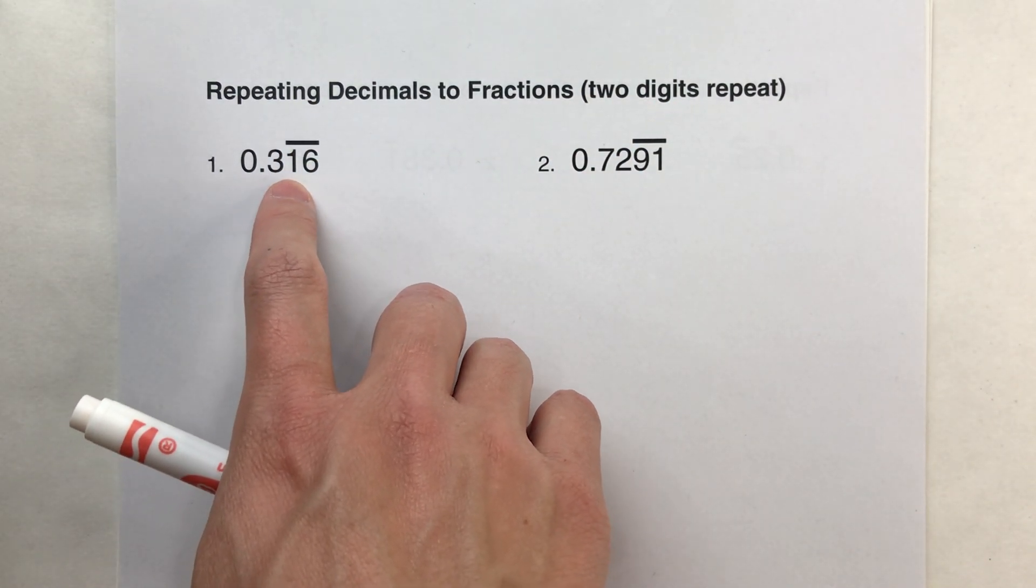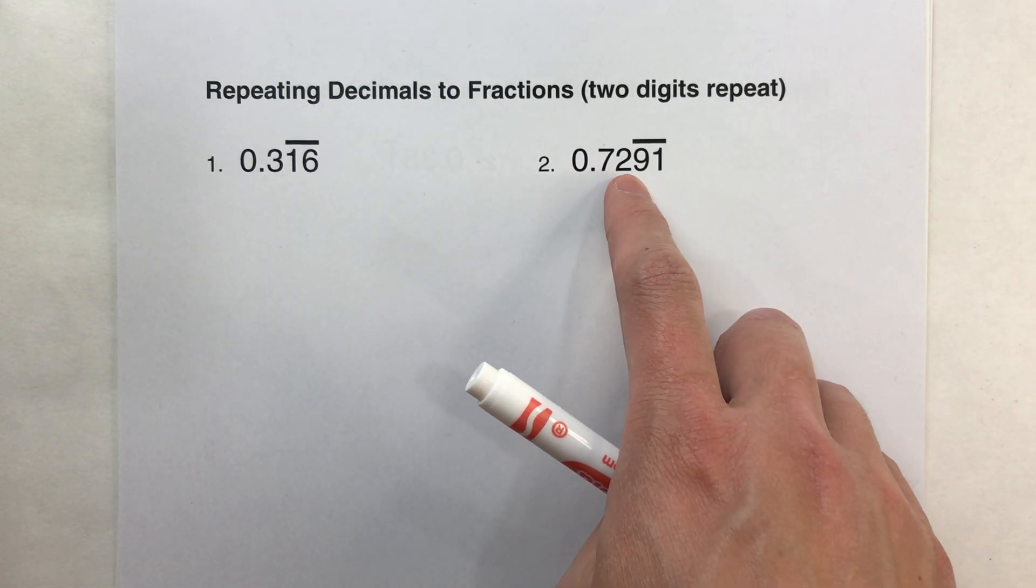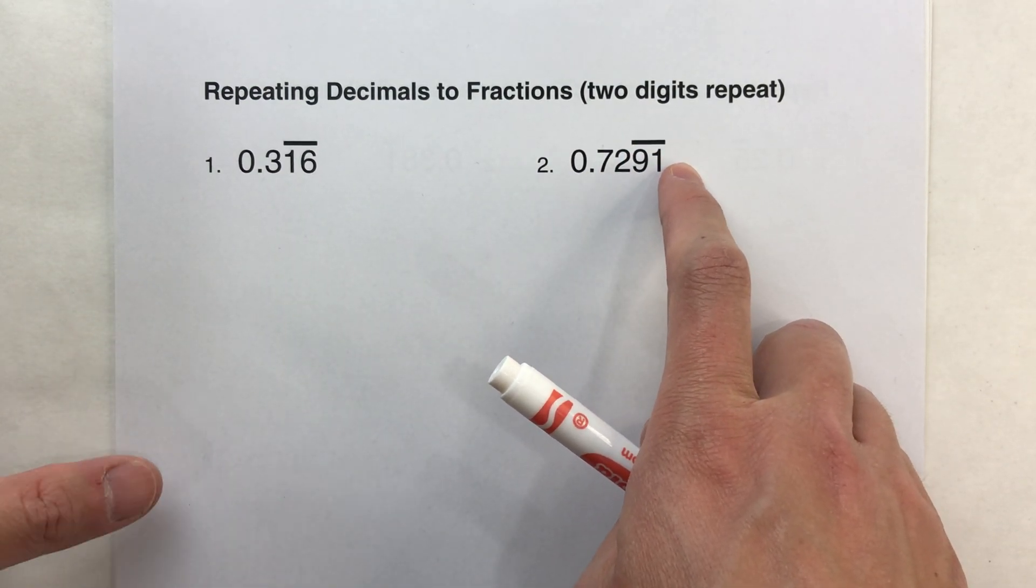For example, 0.316 where the 1-6 is repeating, and 0.7291 where 9-1 are both repeating.